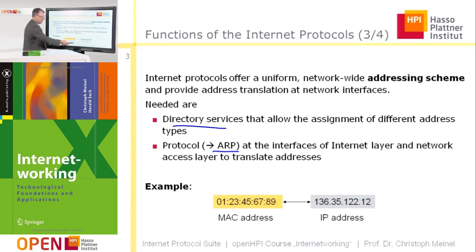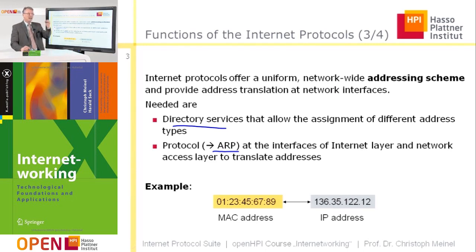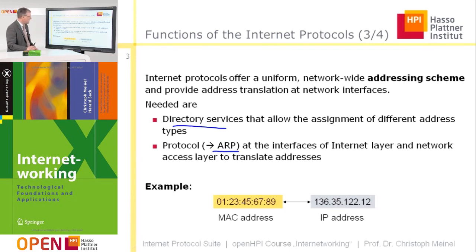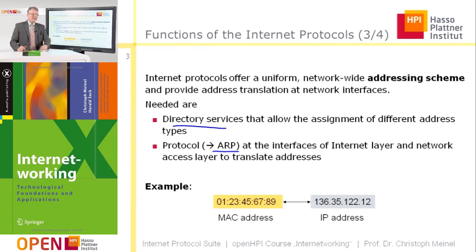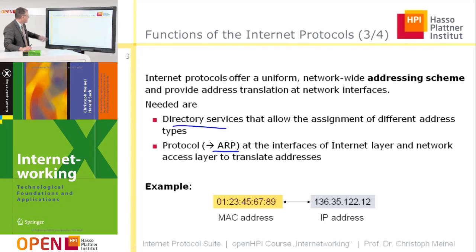As an example: an IP address is assigned in a concrete network to a concrete host, which is characterized in that network by its MAC address. In this way, systems have different types of addresses — their own hardware address that is valid inside the network, and then the internet address that is unique across all interconnected networks.